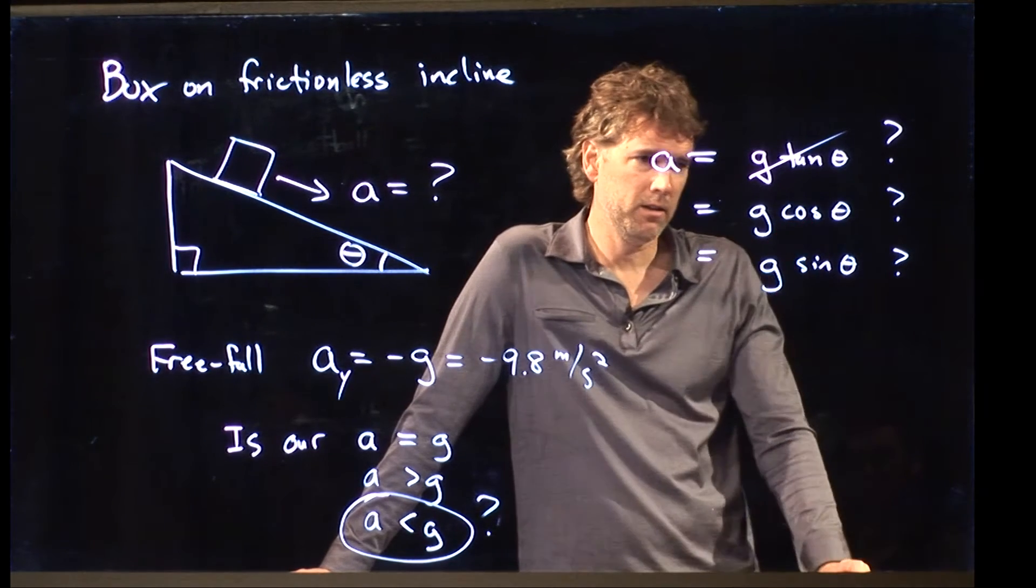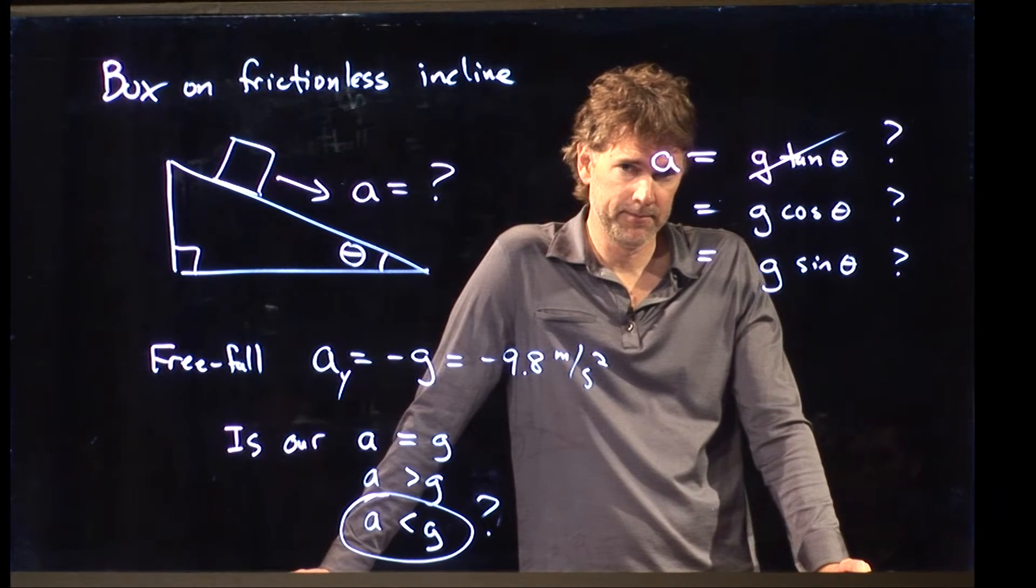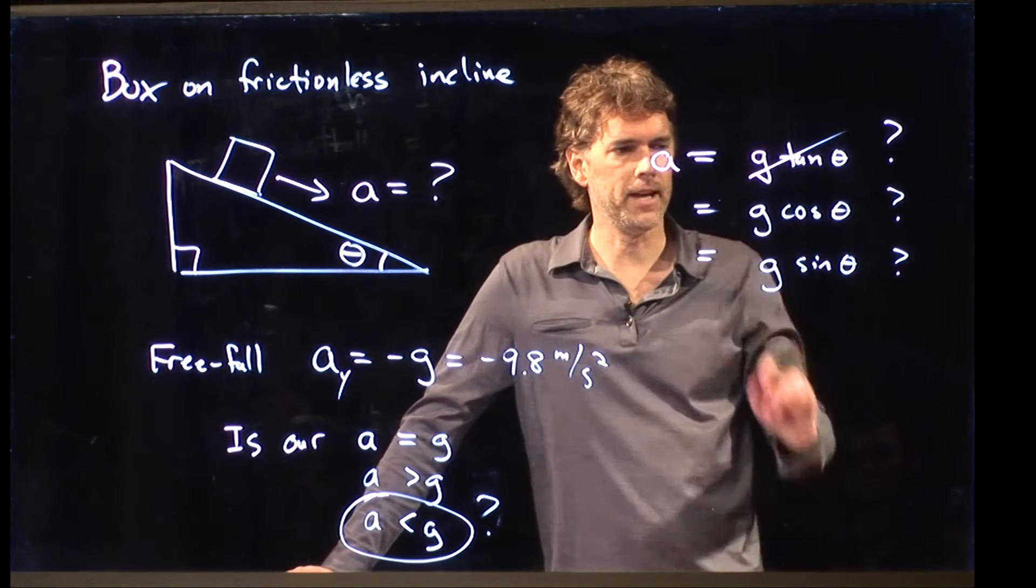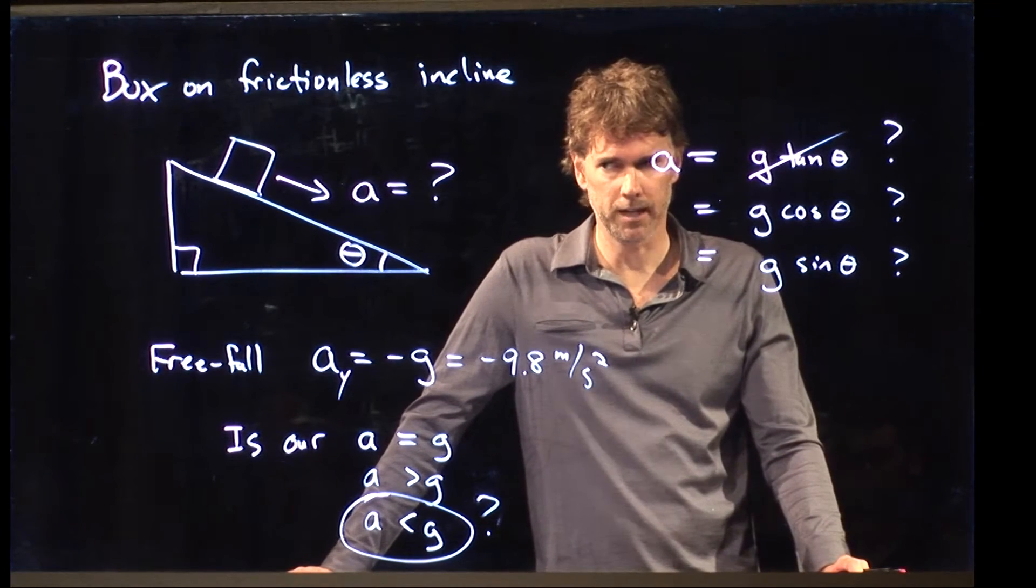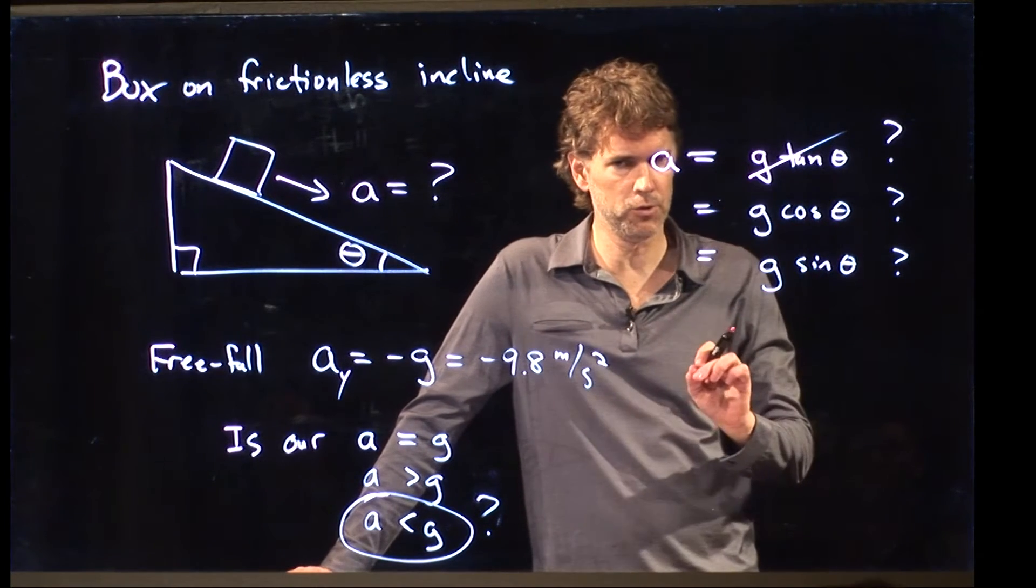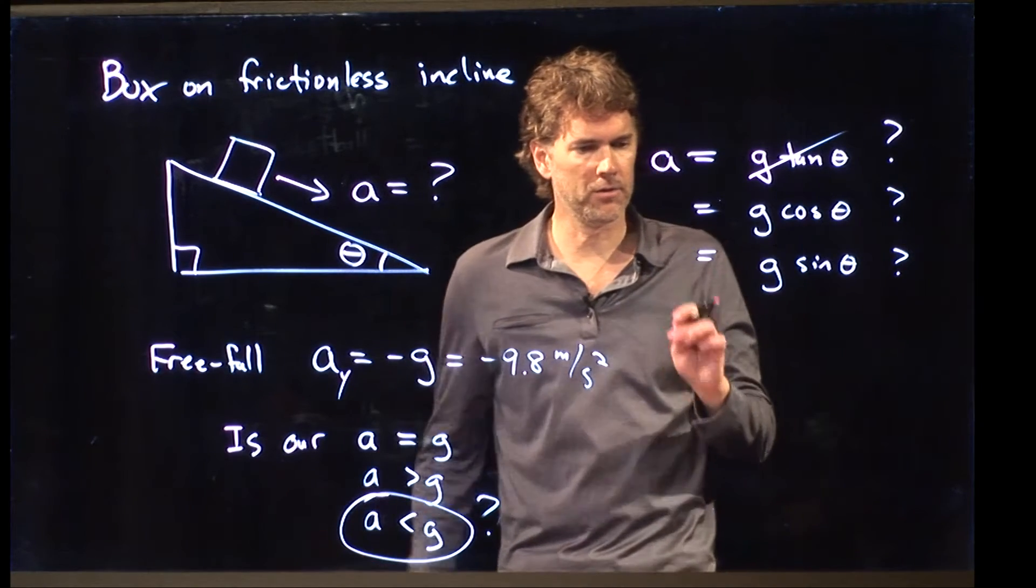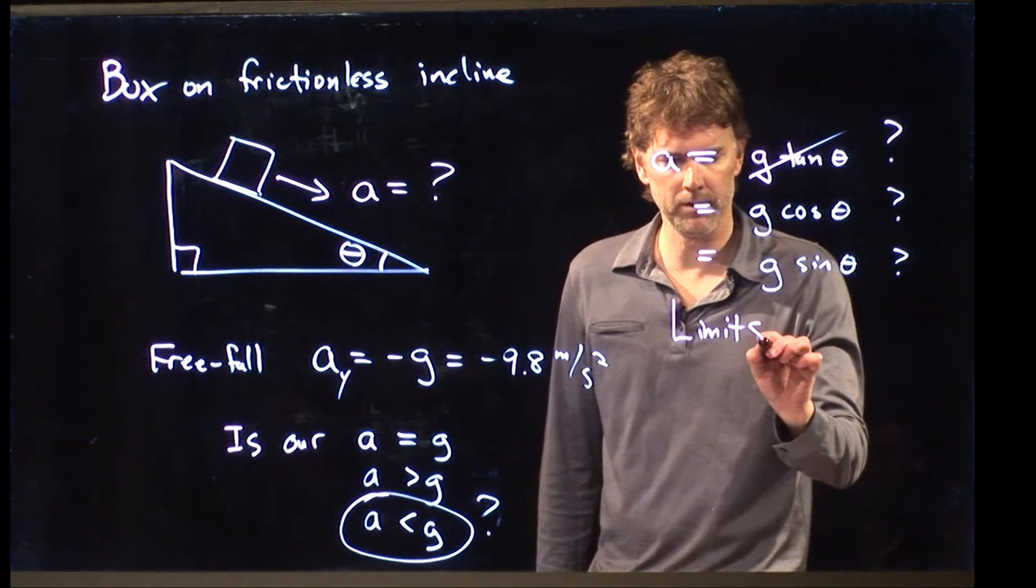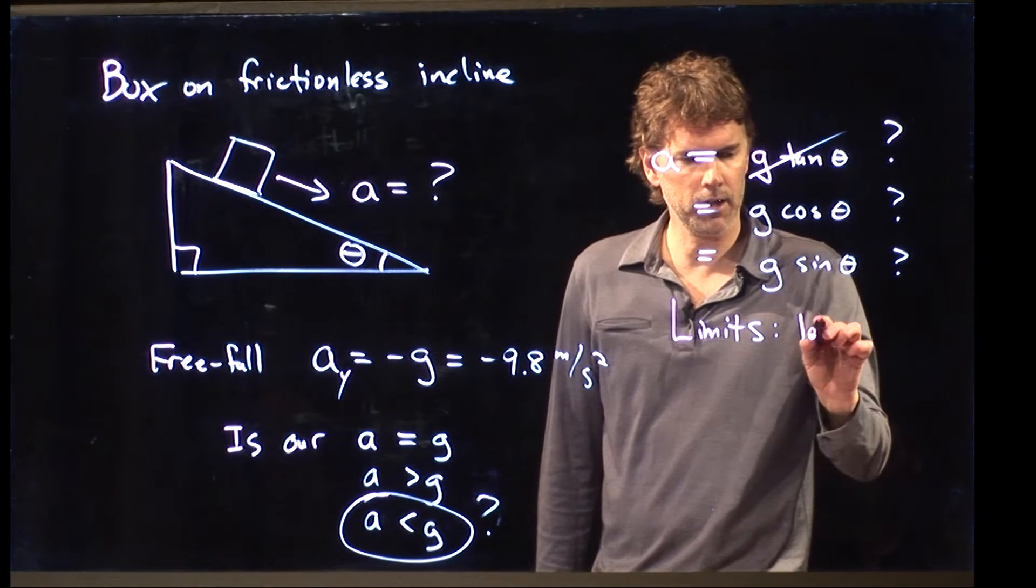G cosine theta, is that a possibility? Yeah. Cosine theta is always less than one. Sine theta is also a possibility because sine theta is always less than one. All right, so now we're down to these two choices. And this is the way you remember how to do this. This is one of the ways.